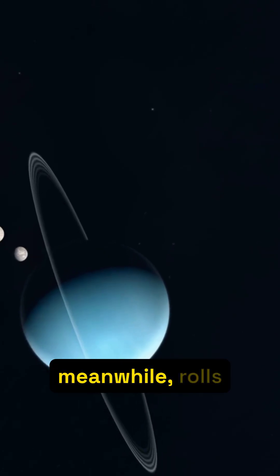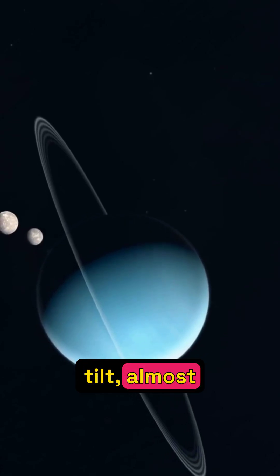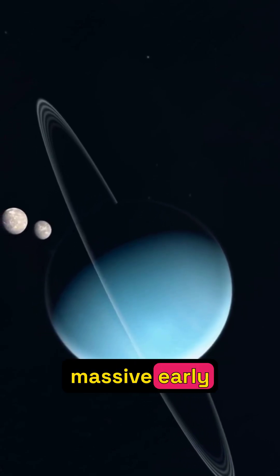Uranus, meanwhile, rolls on its side, a staggering 97-degree tilt, almost certainly caused by a massive early collision.